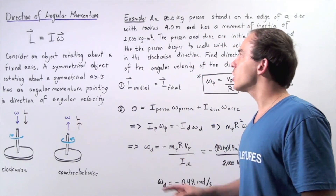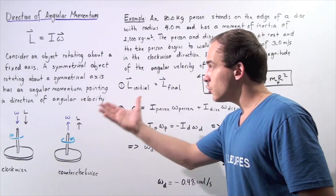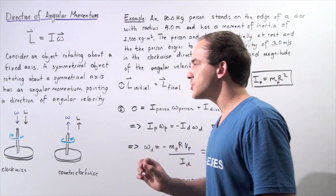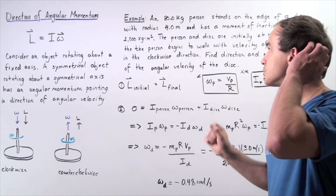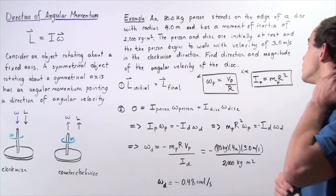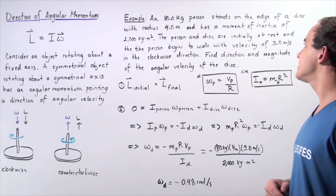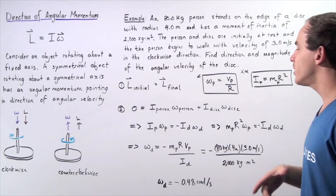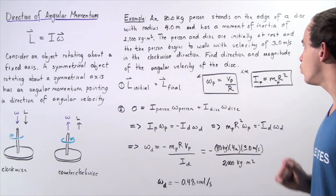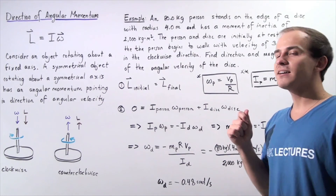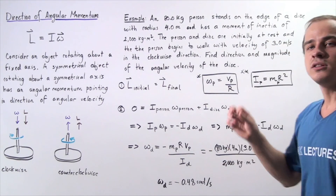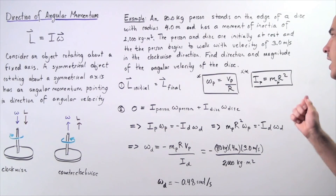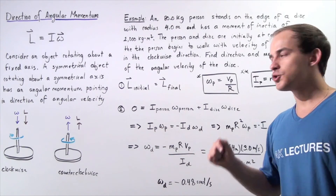Now, knowing this, let's look at the following example. We want to use the concept of conservation of angular momentum and the right-hand rule to calculate the direction and magnitude of angular velocity. Suppose an 80-kilogram person stands on the edge of a disk with a radius of 4 meters, and the disk has a moment of inertia of 2,000 kilogram·meters squared. The person and the disk are initially at rest, and then the person begins to walk with a velocity of 3 meters per second in the clockwise direction — this represents the linear velocity. We want to find the direction and magnitude of the angular velocity of the disk after the person begins to walk.